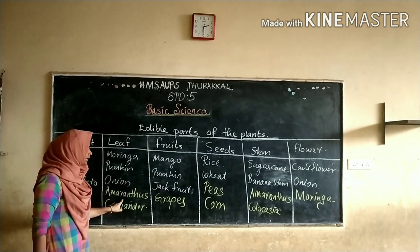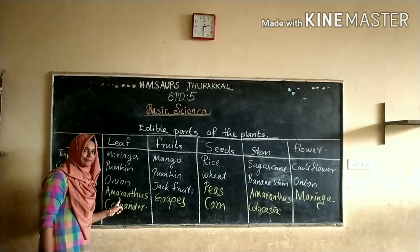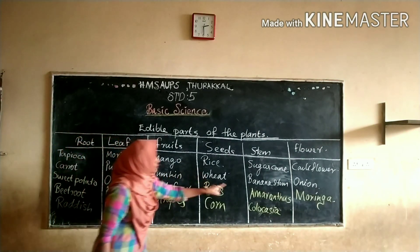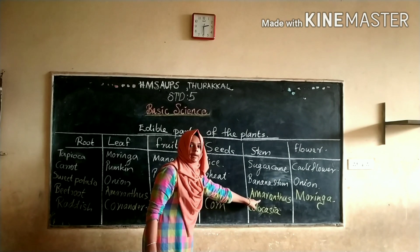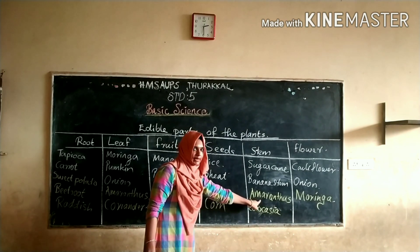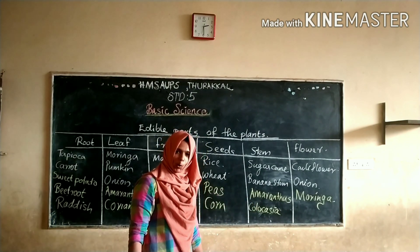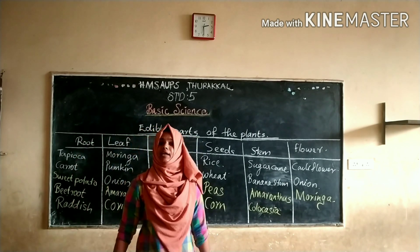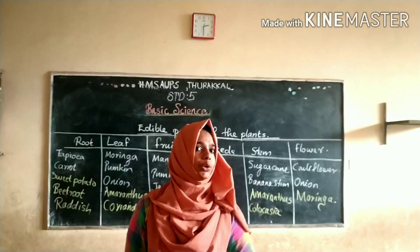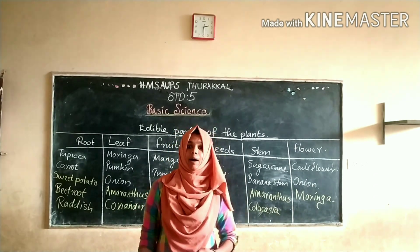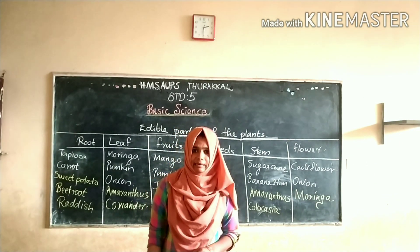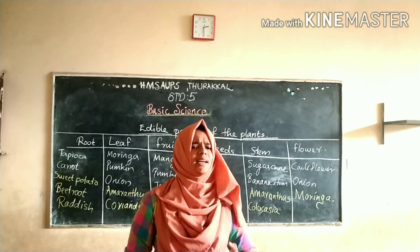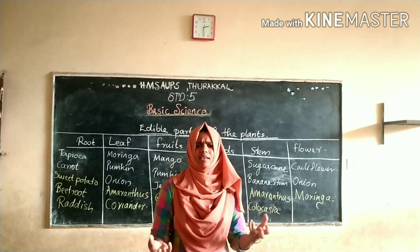Then another example — amaranthus. Here are my old amaranthus. The stem of the amaranthus we can choose for making upiris or curries. Then, what about moringa? Drumstick — you know, we can choose it in sambal or curries. So drumstick, then moringa flower, we can choose for making foods.